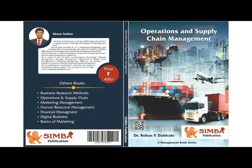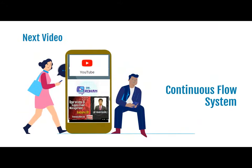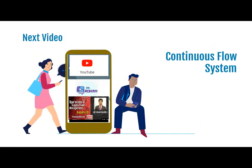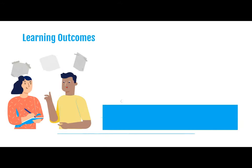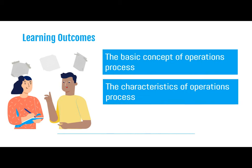This is the book of Operations and Supply Chain Management of Simba Publication, written by myself. In the next video, we will try to understand the continuous flow system. From today's lecture, we have understood the basic concepts of operation processes and have seen the characteristics of operation processes — that is, volume, variety, and flow.